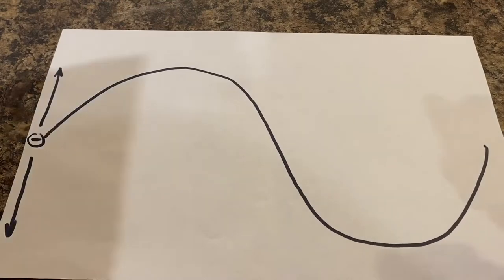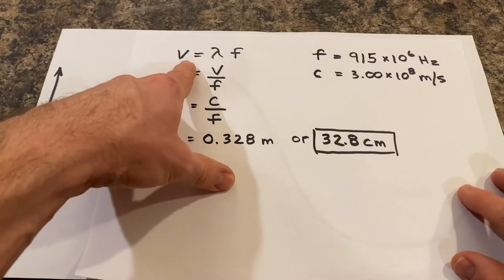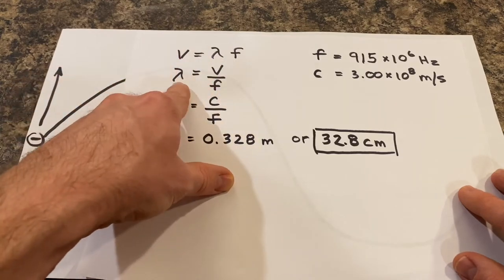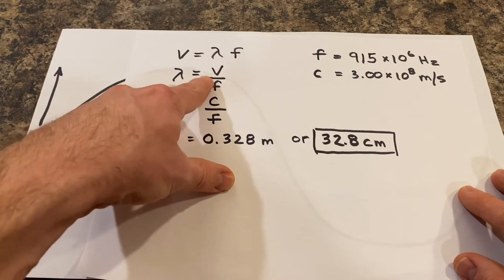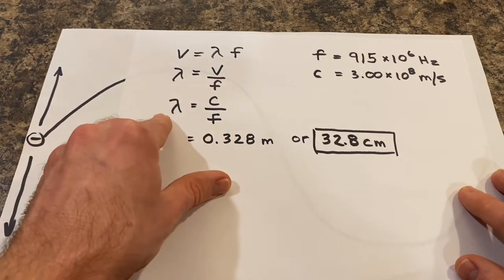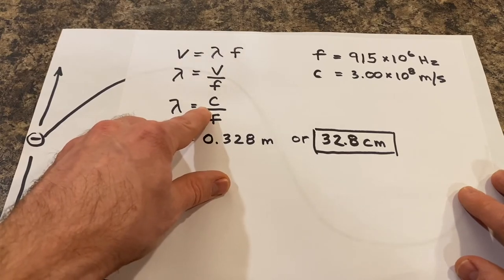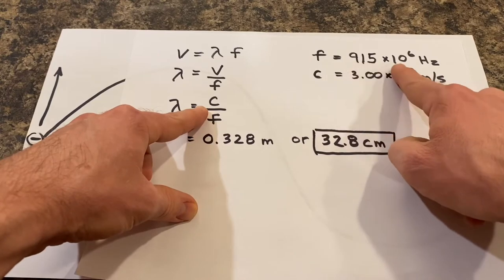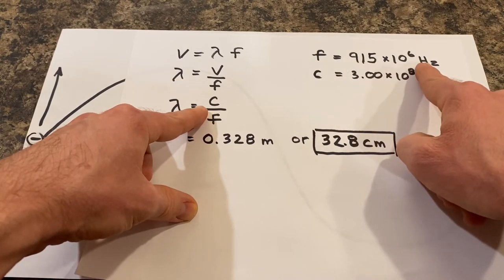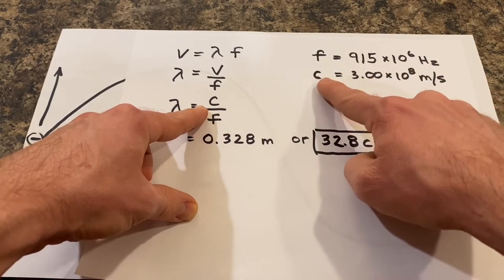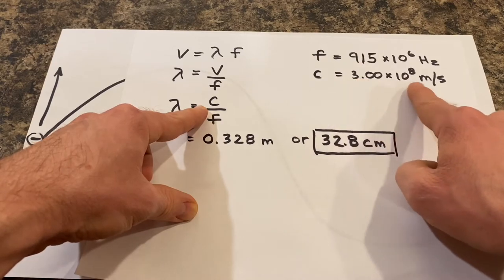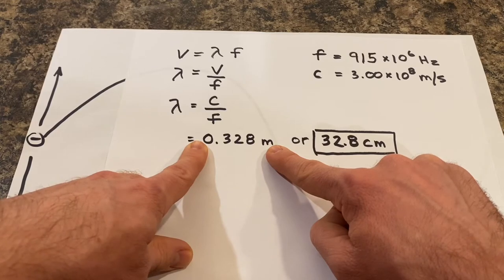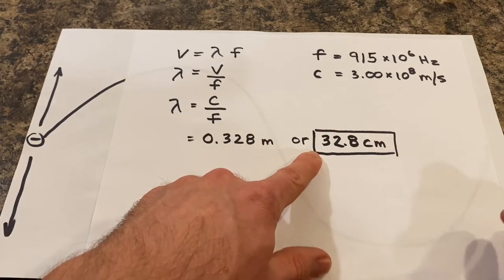Just to prove to you this wave is drawn to scale, we bring in our formula from our Physics 30 formula sheet. Velocity equals wavelength times frequency. Manipulate the formula for wavelength: velocity over frequency. Replace velocity with the speed of light, 3 times 10 to the 8 meters per second. Our frequency is 915 times 10 to the 6 hertz, which is right between 902 and 928. Plug them into the formula, we get a wavelength of 0.328 meters or 32.8 centimeters.